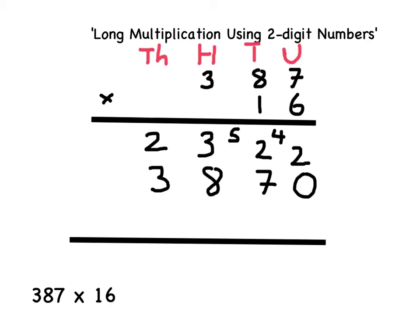I must first look at the units column: 2 add 0, which gives me an answer of 2. Next I must add the numbers in the tens column, 2 to represent 20 and 7 to represent 70. 2 add 7 is 9, so I'm going to put a 9 here to show that there is 90, or 9 tens.